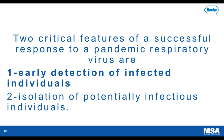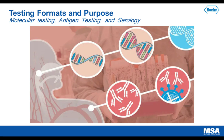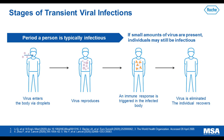There are two critical features of a successful response to a pandemic: early detection of infected individuals, and isolation of potentially infectious individuals. In order to properly detect these individuals, we need to understand the testing formats and their purpose. As of current, there are available tests that are molecular tests, antigen tests, and serology tests.